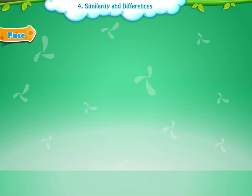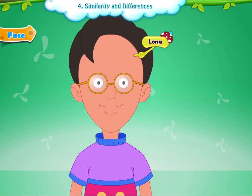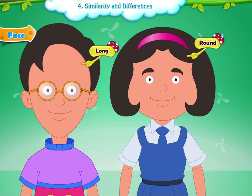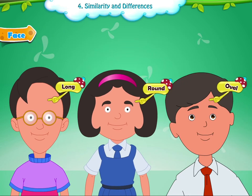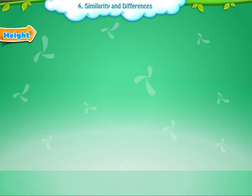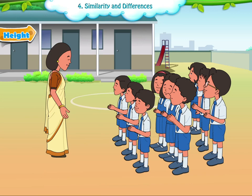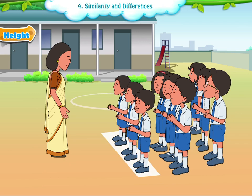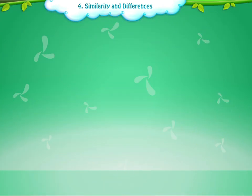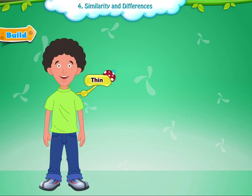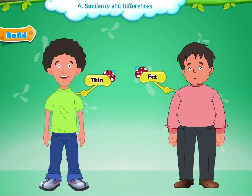Face. Some people have long faces, while some have round faces. Some people have oval faces. Height. We stand for the morning prayer height-wise because some are short and some are tall. Those who have a short height stand in front, while the taller ones stand at the back. Build. Some of us are thin and some of us are fat.